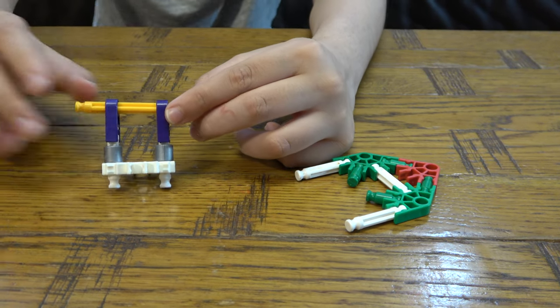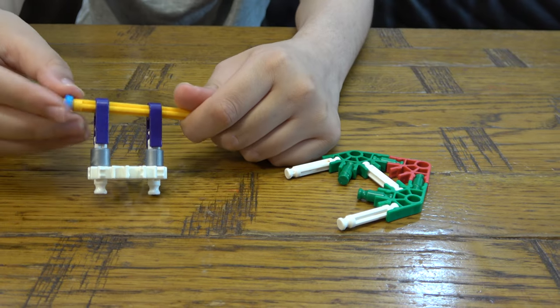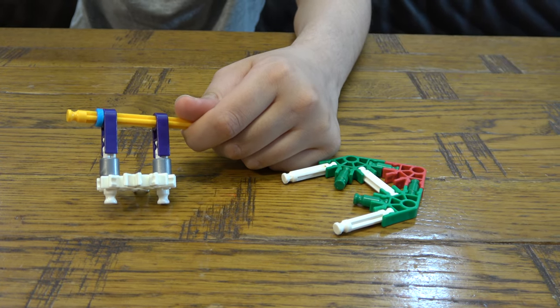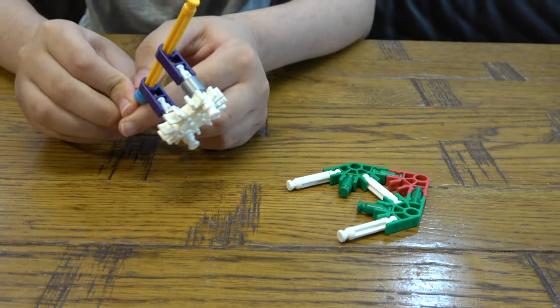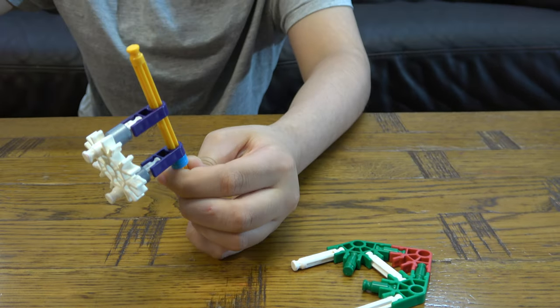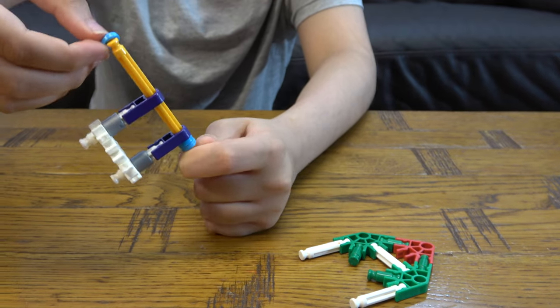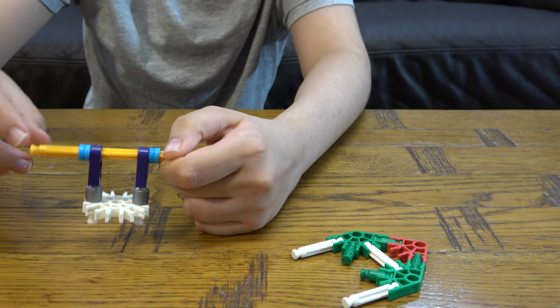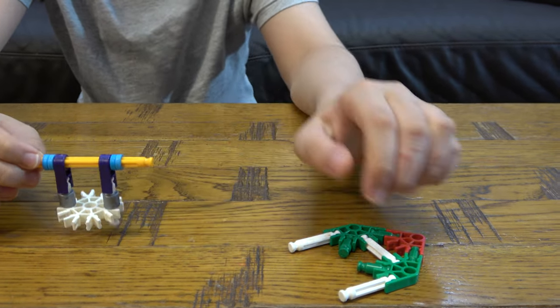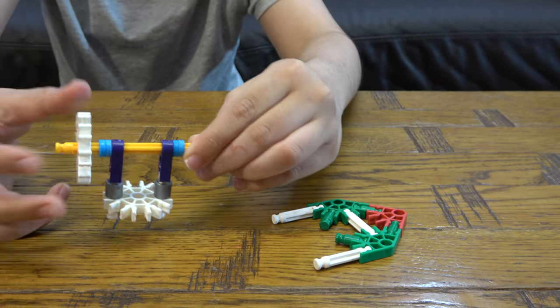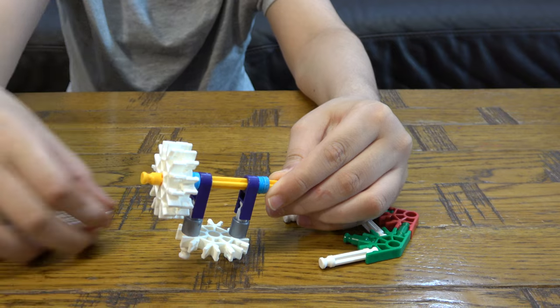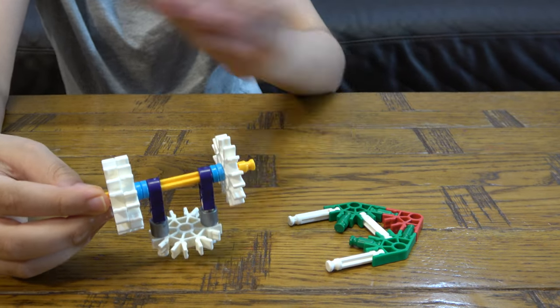There we go. As we place that there we can get two of these on each side. There we go. And now we get four of these, place them on each side like so.